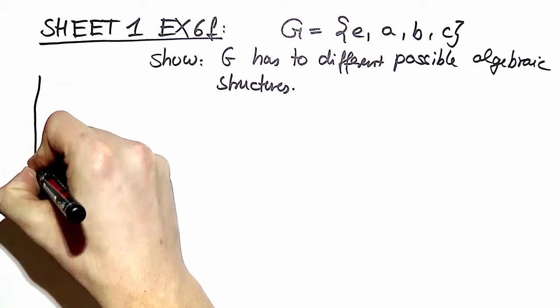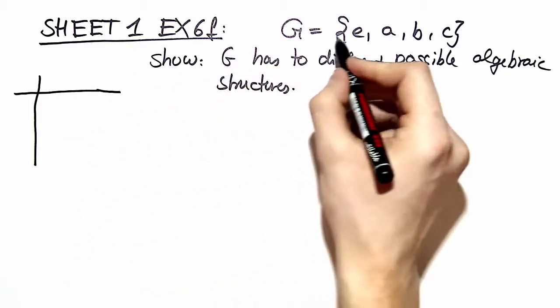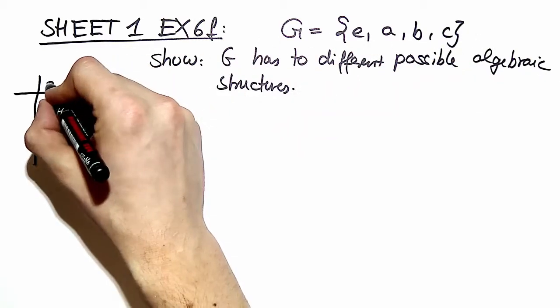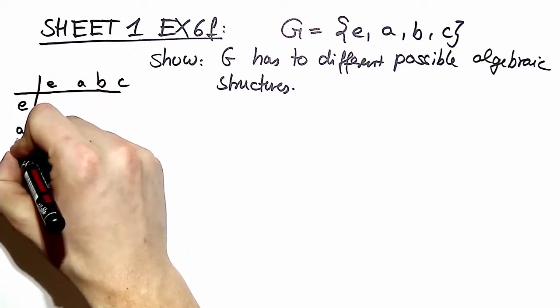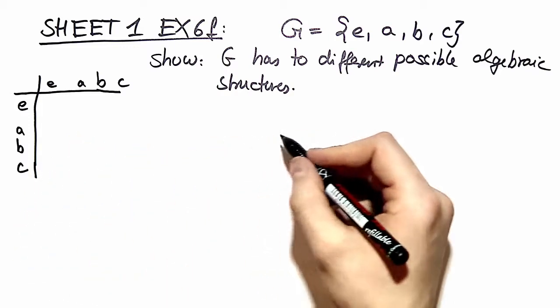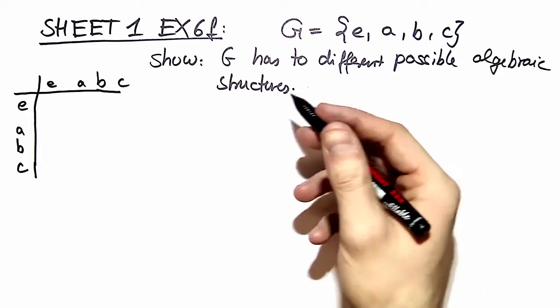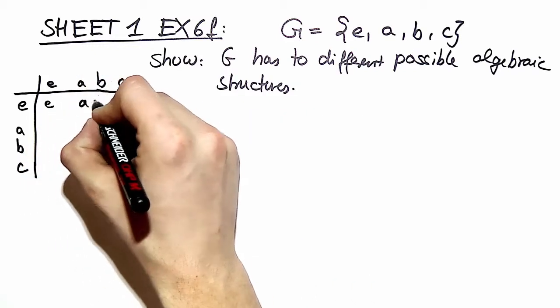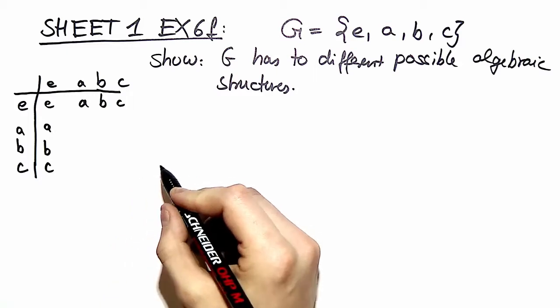We start by writing the most general multiplication table we can imagine. We use our unspecific four elements a, b, c and e. The first thing we know about groups is there must be an identity element. So let's define e to be the identity element and then we can fill out the first row and first column easily.